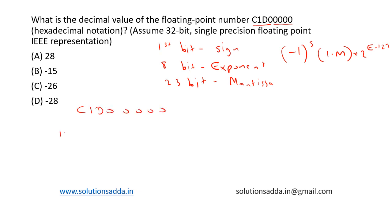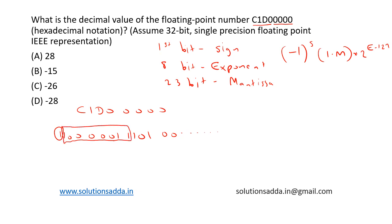Let's write the binary representation of C1D00000. C is written as 1100, 1 is 0001, D is 1101, then we have zeros extending. The first bit is the sign bit, the next 8 bits (bits 1 through 8) form the exponent field, and the remaining 23 bits form the mantissa field.